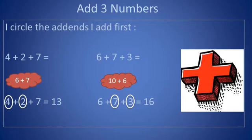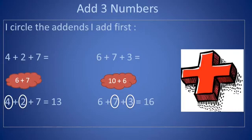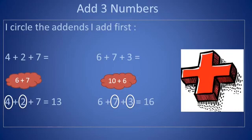Let's count on to find the sum. The greater number is 7. Count on 6 times: 8, 9, 10, 11, 12, 13. So the sum of 6 plus 7 is 13. Now look at the other way — 7 plus 3 equals 10. Now we have 10 plus 6. The greater number is 10. Count on 6 times: 11, 12, 13, 14, 15, 16. The sum is 16.